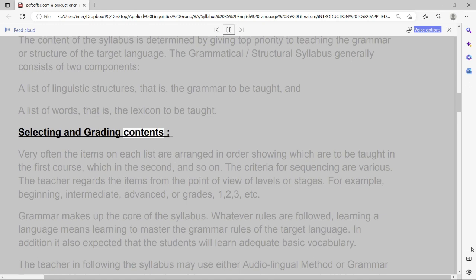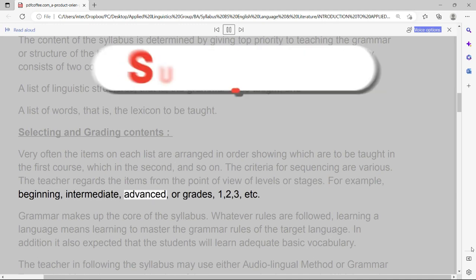Selecting and grading contents. Very often the items on each list are arranged in order showing which are to be taught in the first course, which in the second, and so on. The criteria for sequencing are various. The teacher regards the items from the point of view of levels or stages. For example, beginning, intermediate, advanced, or grades one, two, three, etc.